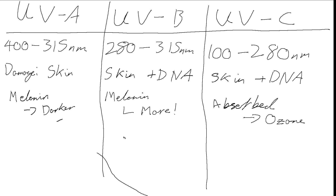UVB is actually also what's responsible for producing Vitamin D. Humans are able to produce Vitamin D when light is incident upon us, and it is this UVB region that results in that. So if we are not exposed to UVB, we can become deficient in Vitamin D if we don't get sufficient supplements from our diet. On the other hand, if we have too much UVB, then we face the dangers of skin and DNA damage and the sunburn that comes from that.